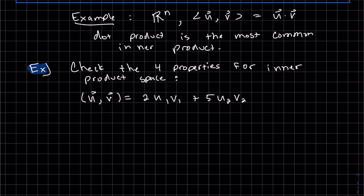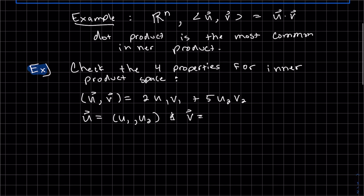So we're going to define this inner product as 2u₁v₁, where they're the first components of each of these, plus 5u₂v₂, where they're the second components of each of those. So let's write that out. And so V is the vector. And so that's what it's defined to be. And we're going to go through the four properties to show that it's an inner product space.